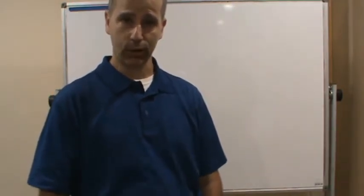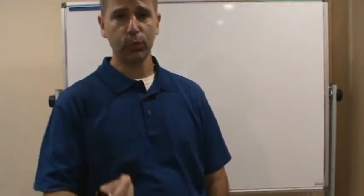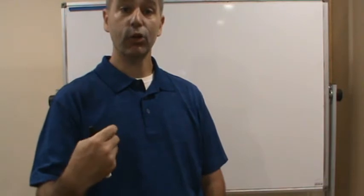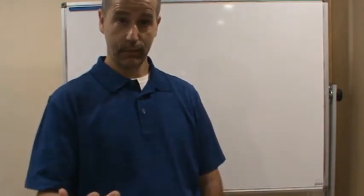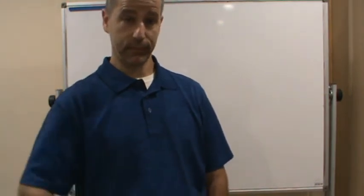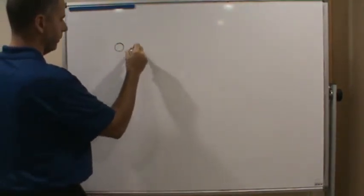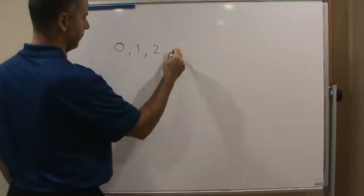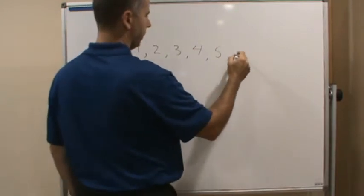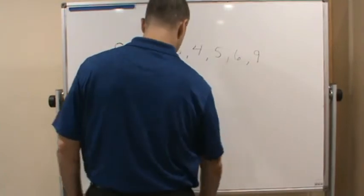What is a numeral? A numeral is a symbol that represents numbers. In our system, we have ten numerals, ten symbols which we call digits in our numbering system. Those begin with zero and go up to nine.